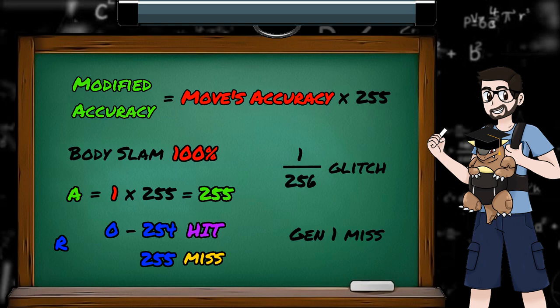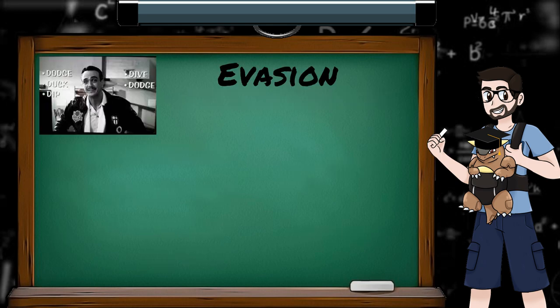Alright, so we've got our move's accuracy calculated, but this can be increased or decreased depending on a few other battle mechanics. Evasion is one way a move's accuracy can be modified. If your enemy is spamming double team, then they'll be harder and harder to hit.